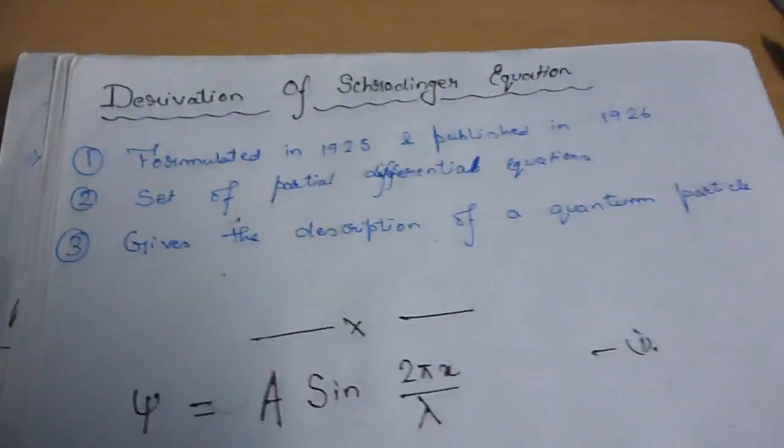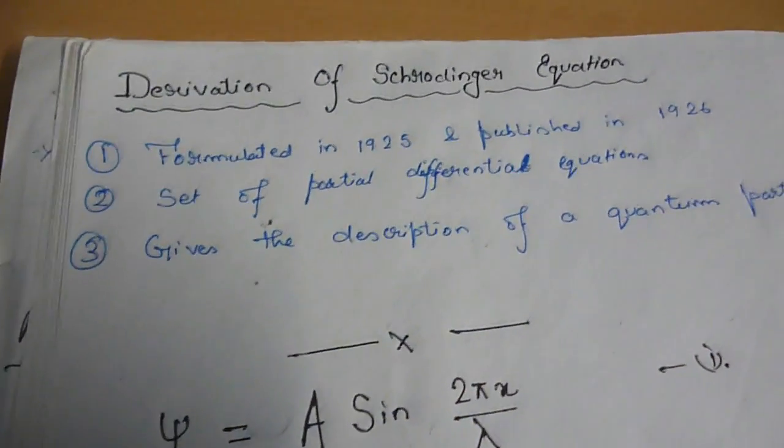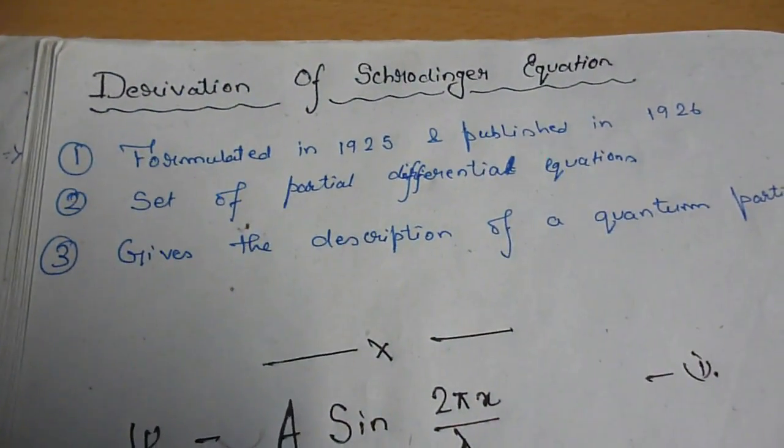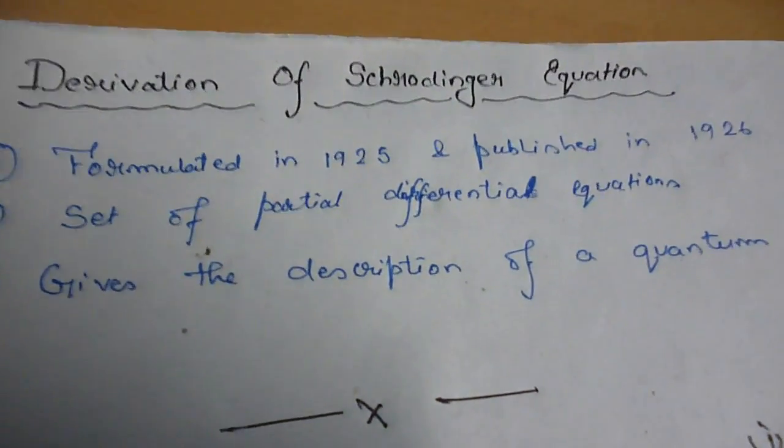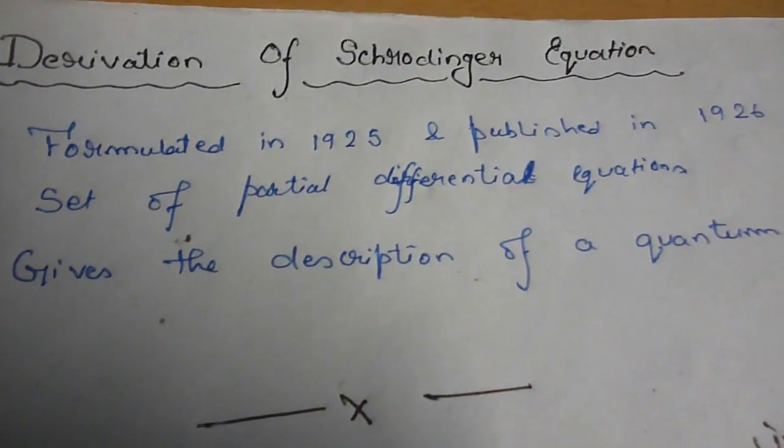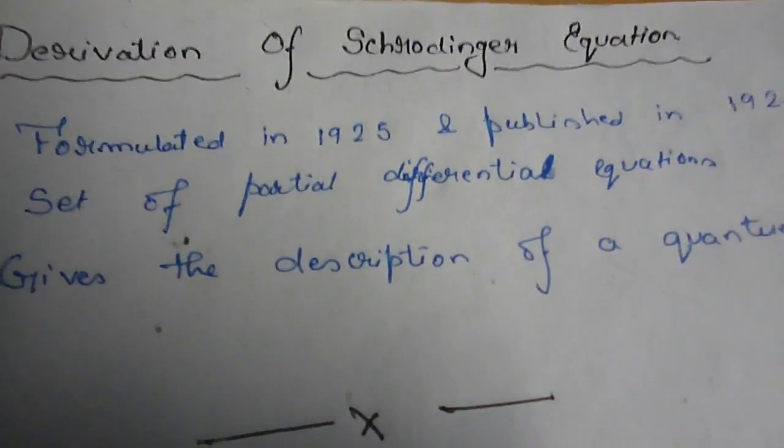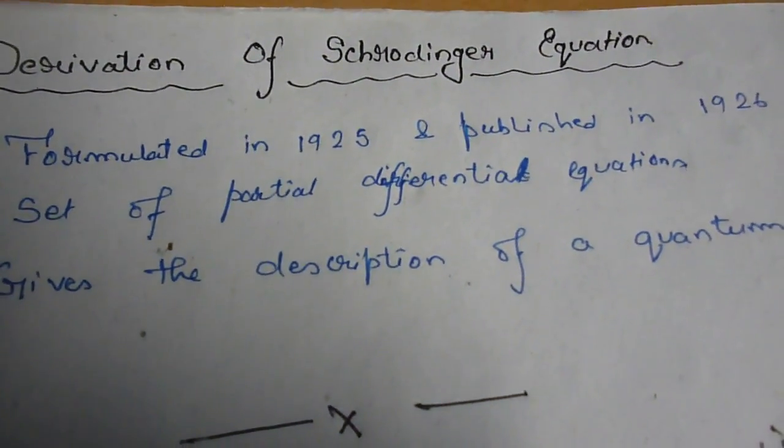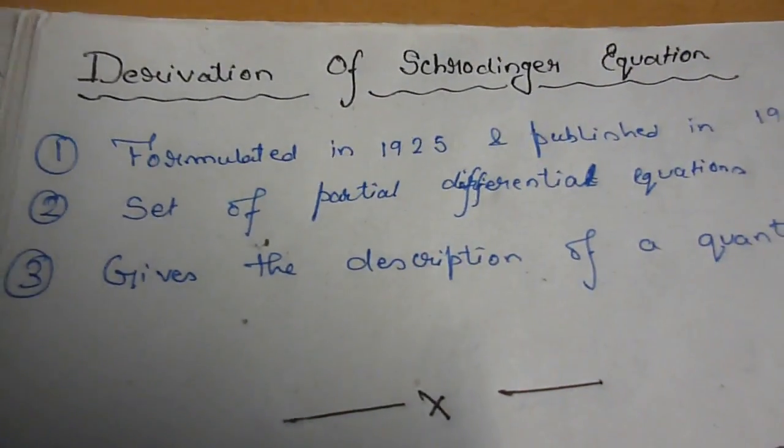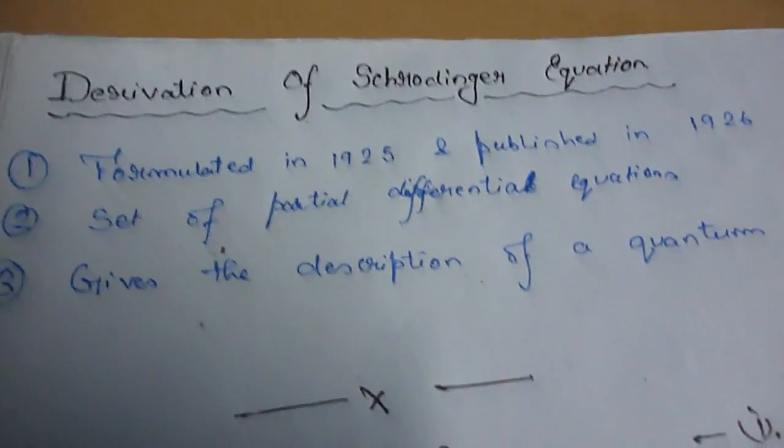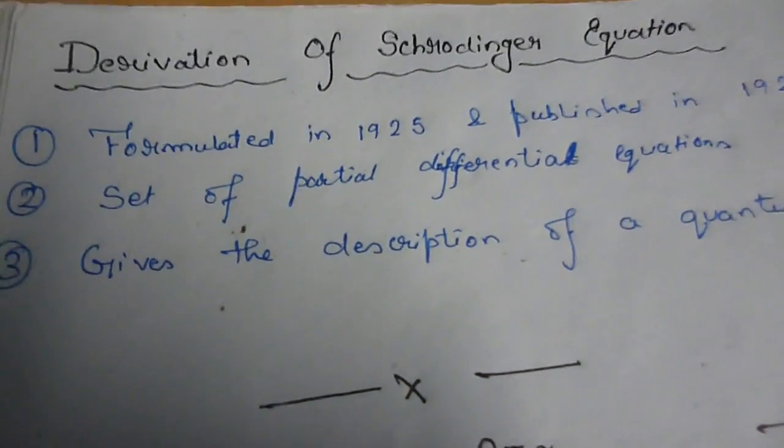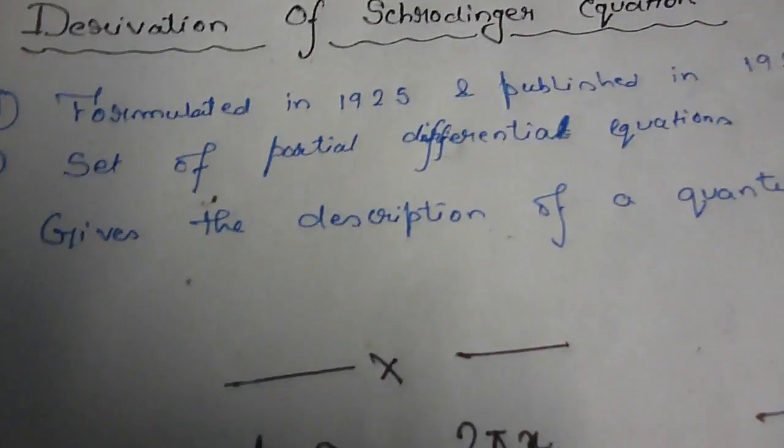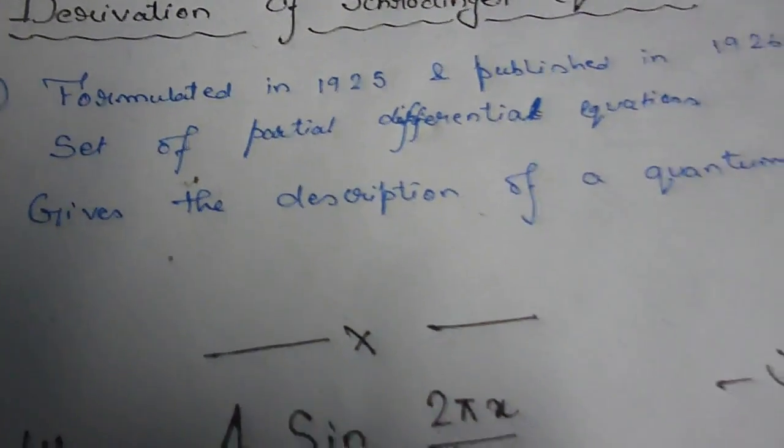Hello YouTube, and today we are going to derive Schrodinger wave equation. This equation was formulated in the year 1925 and was published in the year 1926 by Austrian physicist Erwin Schrodinger. This equation consists of a set of partial differential equations and helps us to describe any quantum particles like atoms, molecules, and all those things.